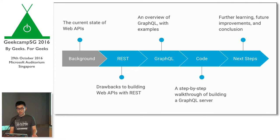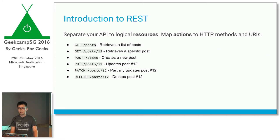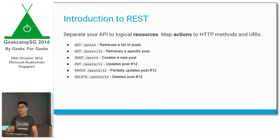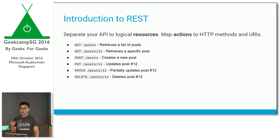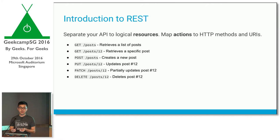We're going to look at REST, which is how we're currently building web APIs. The key idea of REST is we separate our API into different logical resources — for example, posts, users, and comments for a blogging platform. We then map CRUD actions — create, read, update, delete — using a combination of HTTP methods such as GET and POST, and URIs. To retrieve a list of posts, we make an HTTP GET request to the post namespace, and so on for each CRUD action.